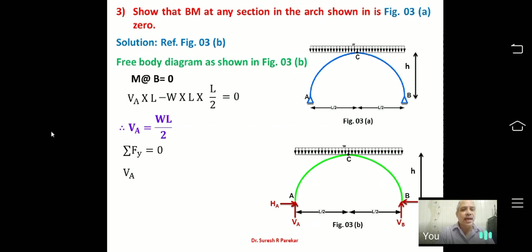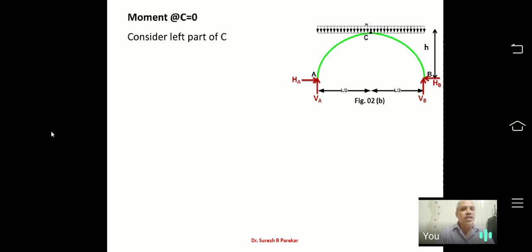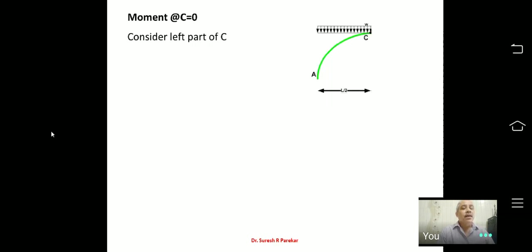From ΣFY = 0: VA + VB − W×L = 0, confirming VB = WL/2. To find horizontal reaction H, we take moment about C = 0, considering only the left part of the arch, since moment about C from both left and right equals zero.